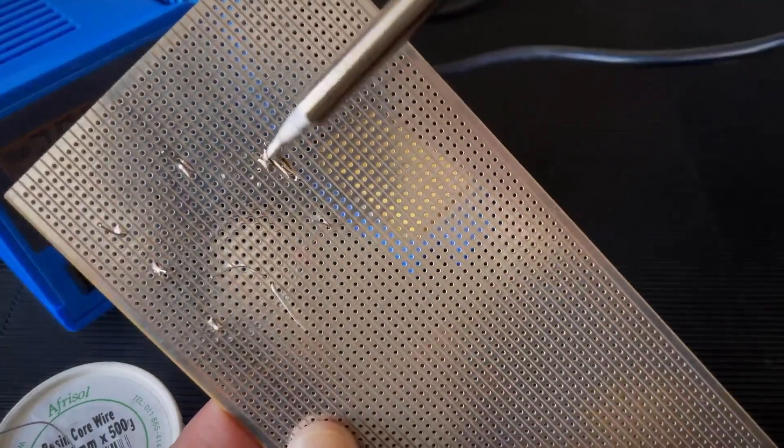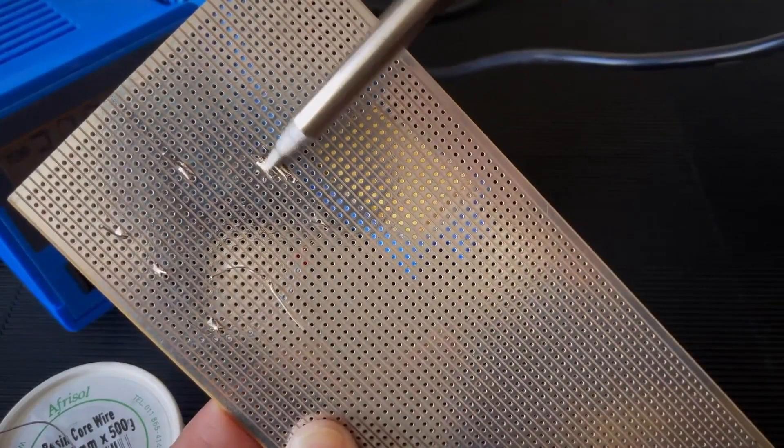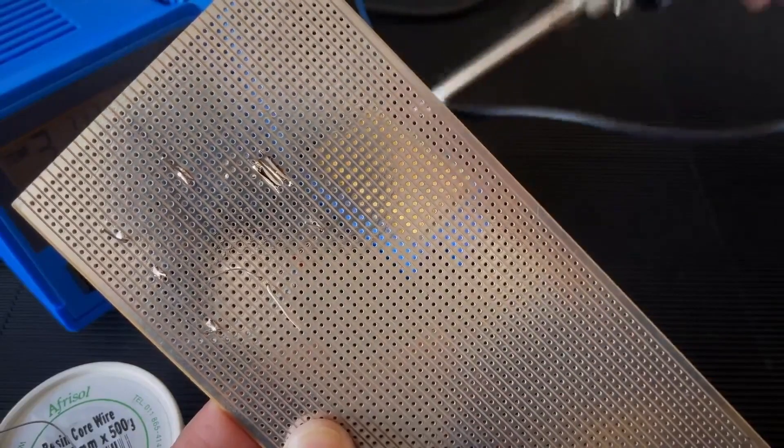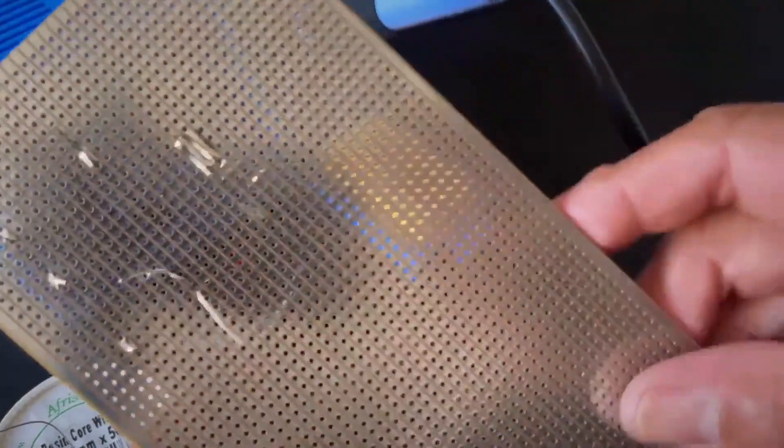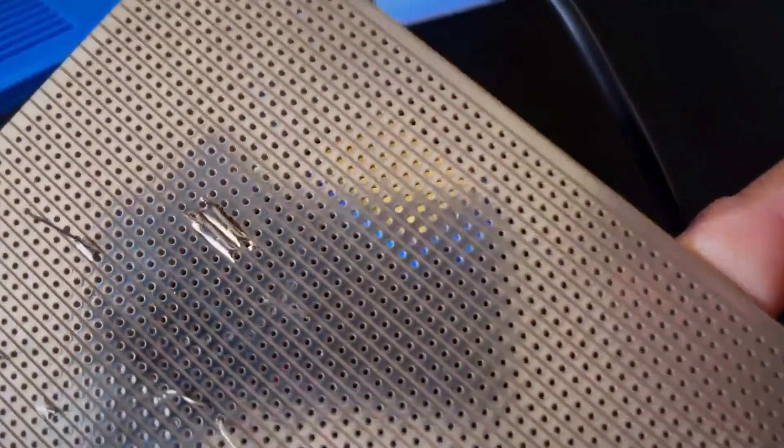And again, the tip is taking some of the solder and then you clean it. Look there. Okay. Those tracks are now electrically separated again. No short.